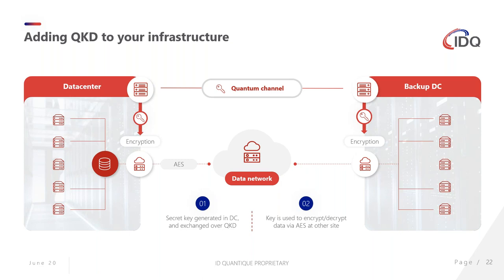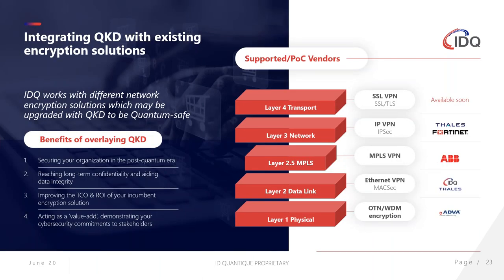We now have many different companies implementing this with our quantum key distribution system. The QKD system gives keys to the encryptors, and you can use different types of encryptors. We work with many different companies — ADVA, Thales, ABB, Fortinet, and others — each able to take the quantum keys and use them in their own system. We are also in advanced discussions with many others to see how quantum keys can be added to their systems to provide an extra layer of security.